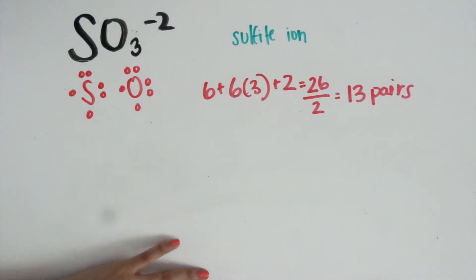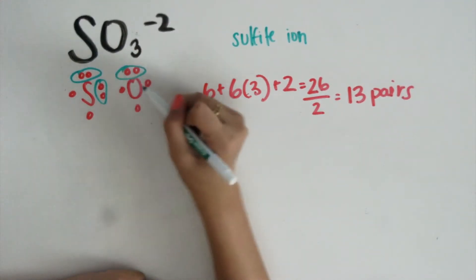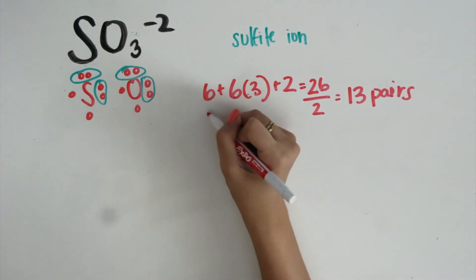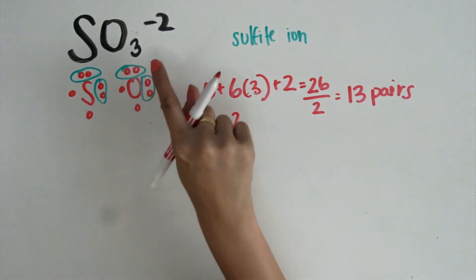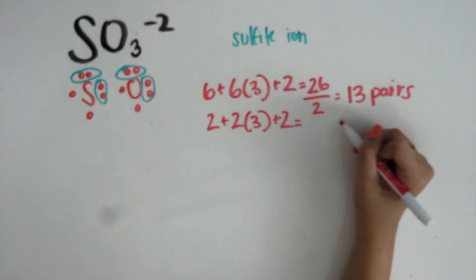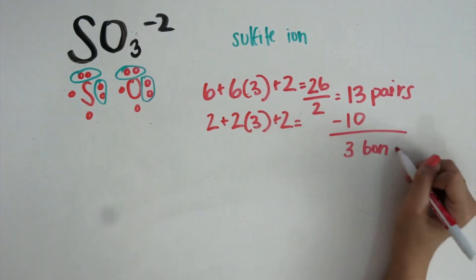Then we subtract the unshared pairs. There are 2 in sulfur and 2 in oxygen. So 2 plus 2 times 3 because there are 3 oxygen atoms. Plus 2 because of the charge. Subtract 10 and this equals 3 bonds.